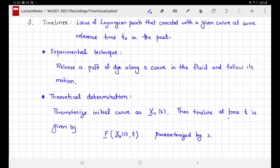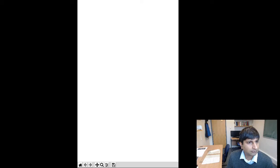The theoretical determination follows the same protocol. Let's say we are given the initial curve x₀(s) parameterized by parameter s. Then the timeline at some subsequent time t is given by the Lagrangian position of all the points that made this initial curve. At subsequent time t, t is a fixed value that you substitute, and the curve is still parameterized by s.